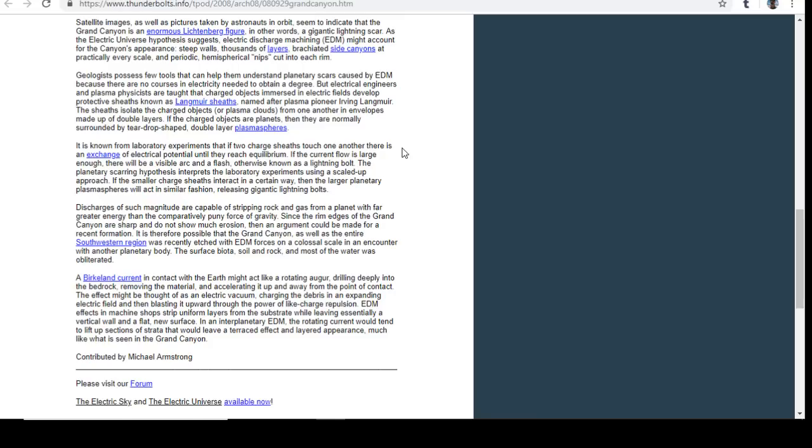Was this formed over millions of years by slow erosion, or because of plasma? It's known from laboratory experiments that if two charged sheaths touch one another, there's an exchange of electrical potential until they reach equilibrium. If the current flow is large enough, there will be a visible arc and a flash—a lightning bolt. The planetary scarring hypothesis interprets the laboratory experiments using a scaled-up approach. If smaller charge sheets interact in a certain way, then larger planetary plasma spheres will act in a similar fashion, releasing gigantic lightning bolts. Discharges of such magnitude are capable of stripping rock and gas from a planet with far greater energy than the comparatively puny force of gravity.